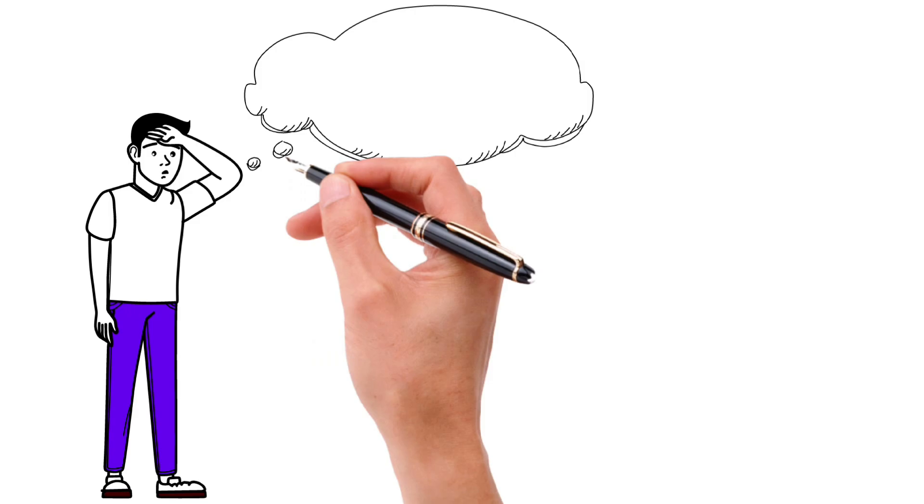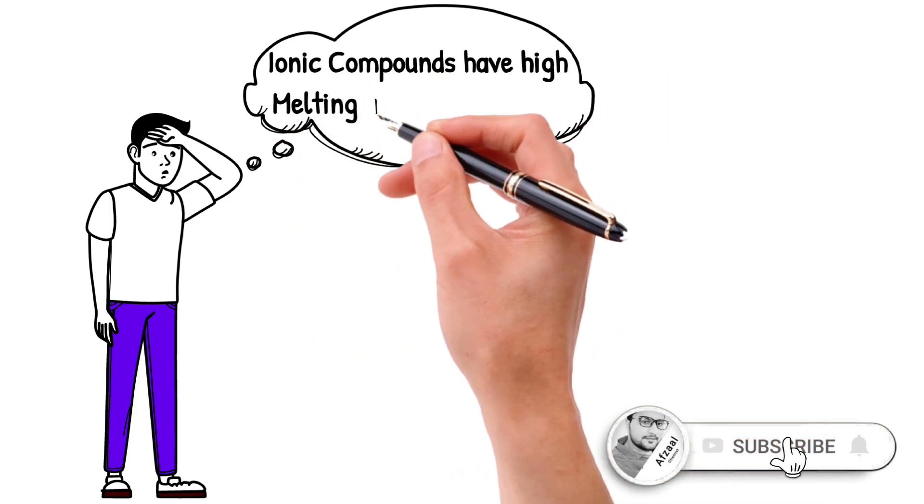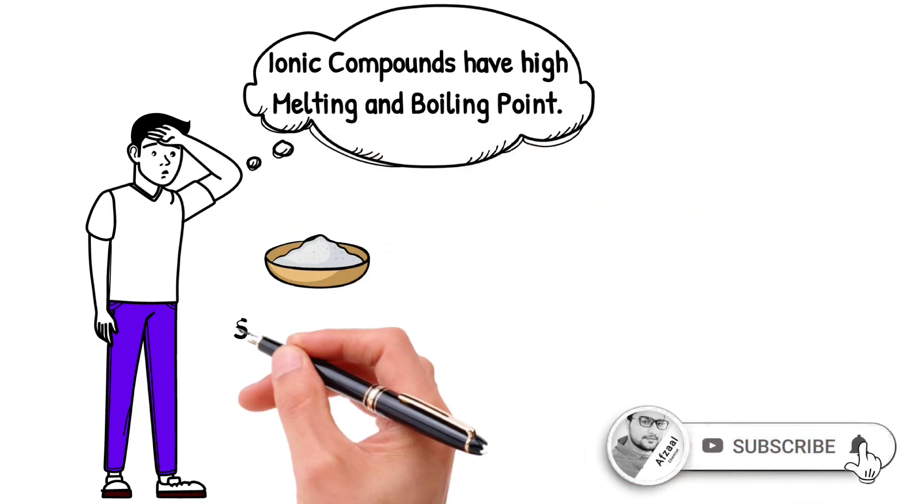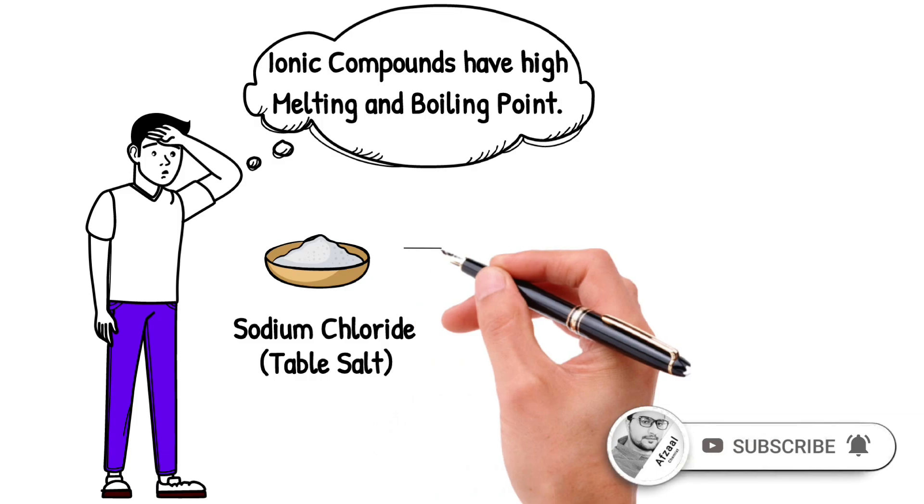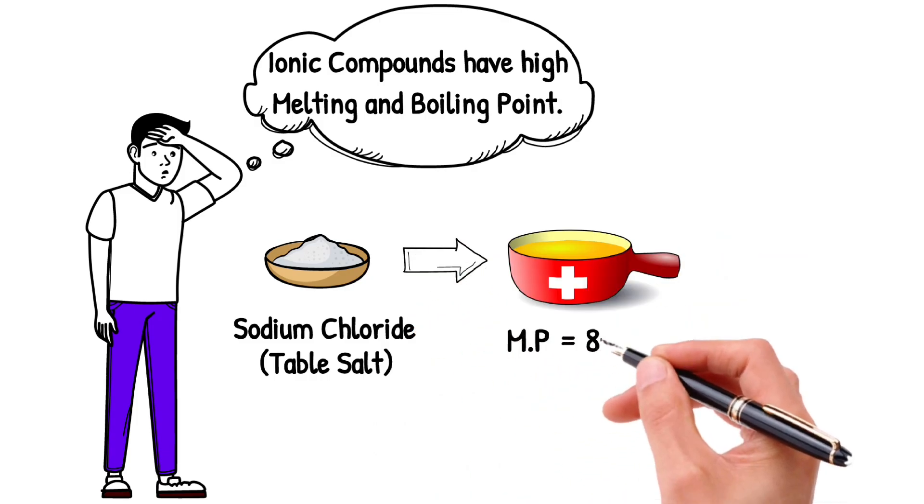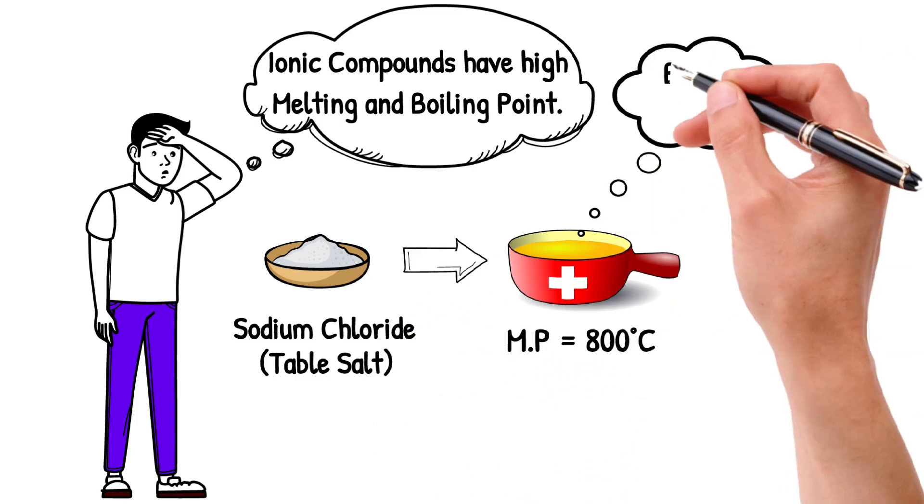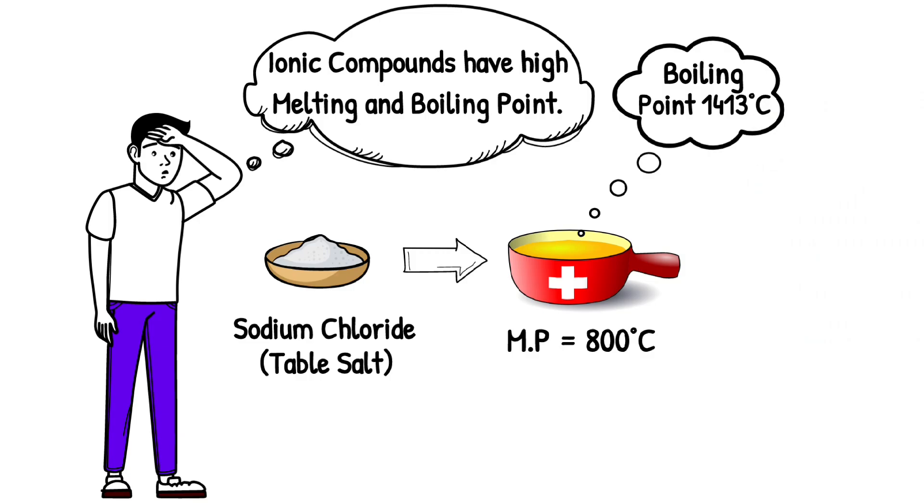Ionic compounds have high melting and boiling points. For example, sodium chloride, which is also known as table salt, has melting point 800 degrees Celsius, and a boiling point 1413 degrees Celsius.